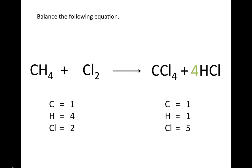Remember, we can only add coefficients — we can never change subscripts. Now if we count up the number of each type of atom on both sides, we still have one carbon atom on both sides, and now we have four hydrogen atoms on both sides. But by putting a four-coefficient in front of HCl, we've also increased the number of chlorine atoms on our product side. We now have a total of eight chlorine atoms — four from CCl4 and four from our four molecules of HCl.